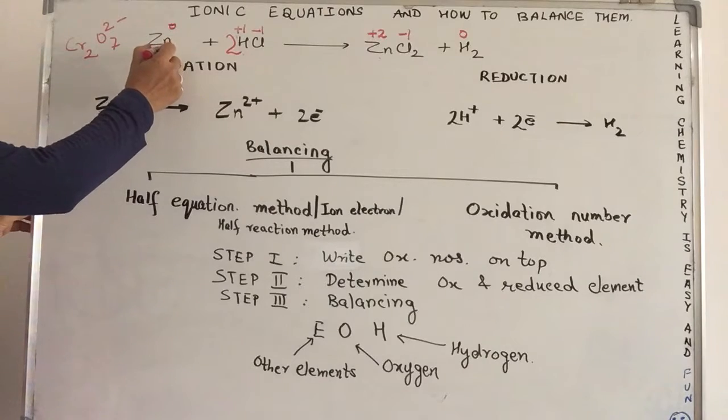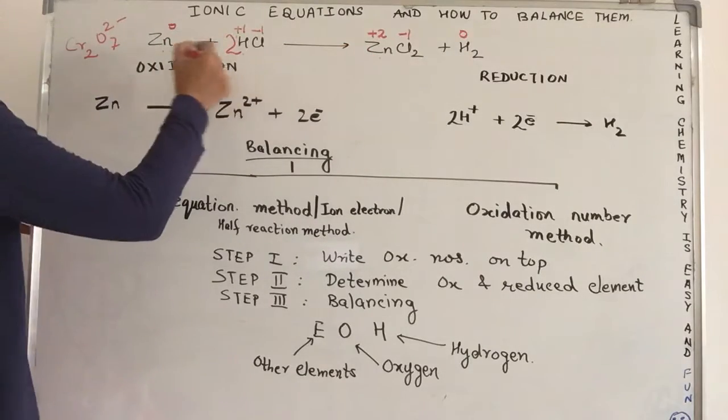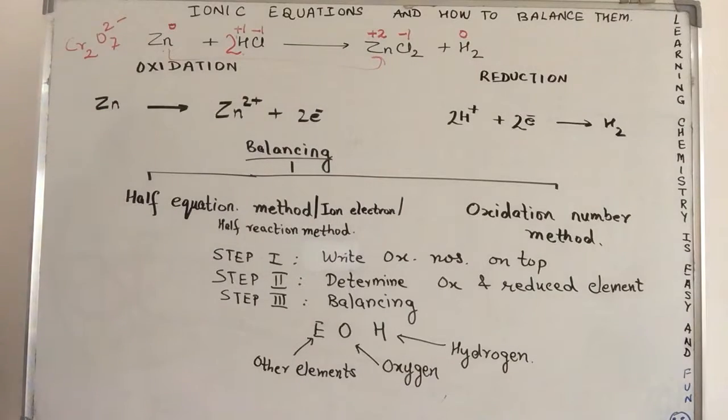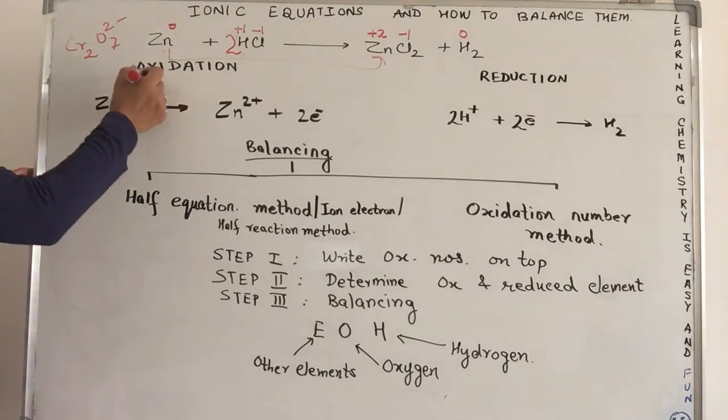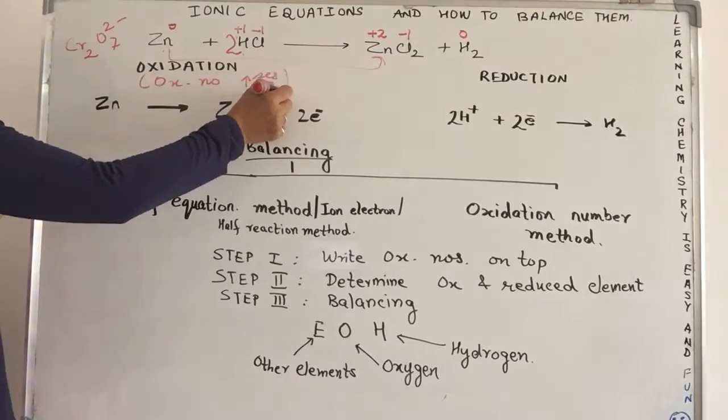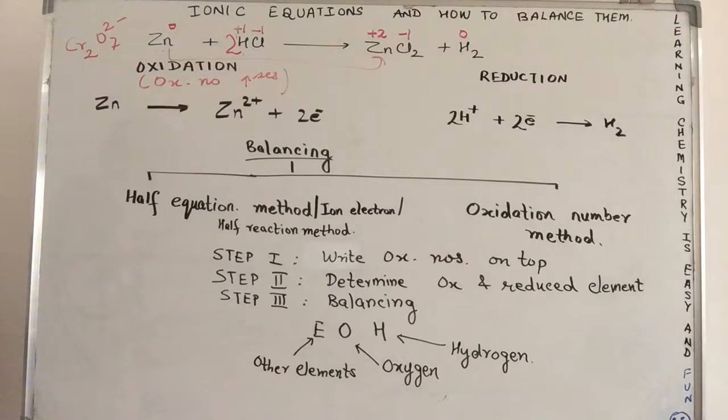Zn0 is changing to Zn2 positive. That means oxidation number is increasing. Oxidation number increases is absolutely right. From the previous video, we have learnt that oxidation number increases means it is a process involving oxidation.